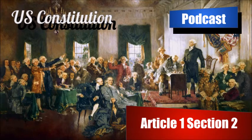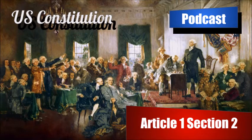They give a provision for what representation to give to each state until such enumeration shall be made: New Hampshire three, Massachusetts eight, Rhode Island and Providence Plantations one, Connecticut five, New York six, New Jersey four, Pennsylvania eight, Delaware one, Maryland six, Virginia ten, North Carolina five, South Carolina five, and Georgia three. States were not originally districted — that came into effect later, with districts in the states having equal population in each district.